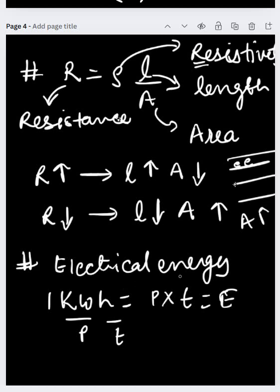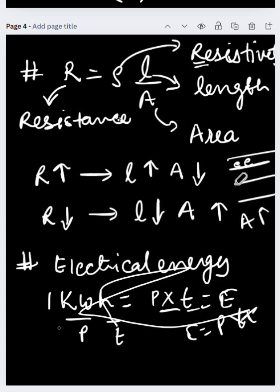There's another formula we use for electrical energy conversion, which we represent as power multiplied by time. Energy = P × t, which gives us kilowatt-hour. Kilowatt comes from power, and hour from time.